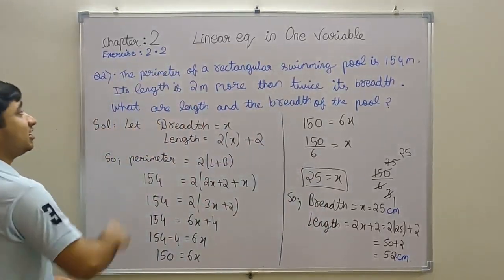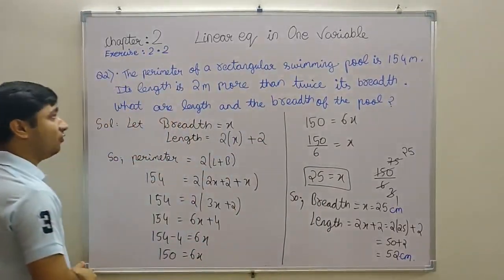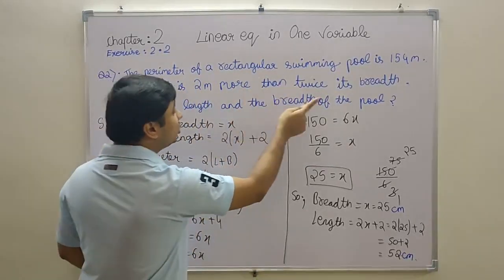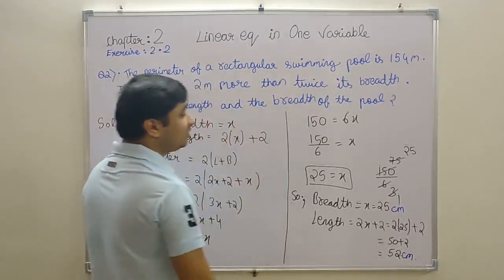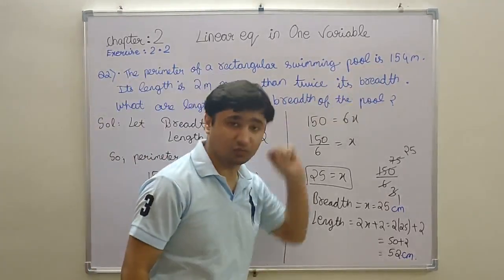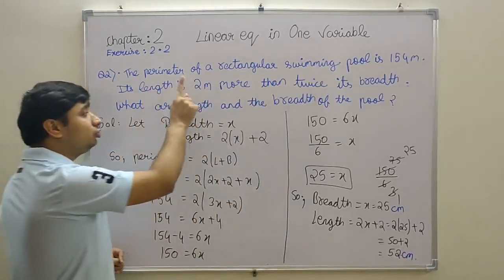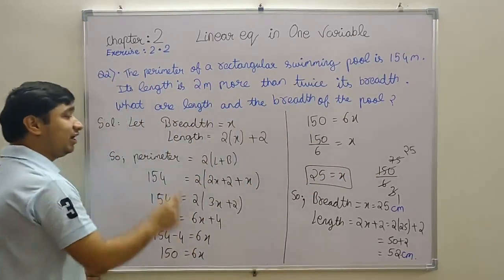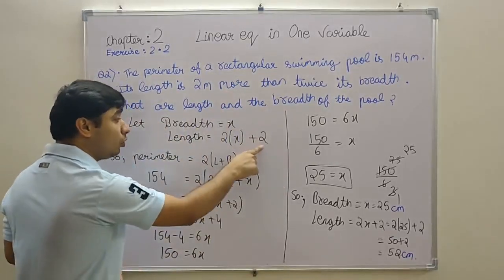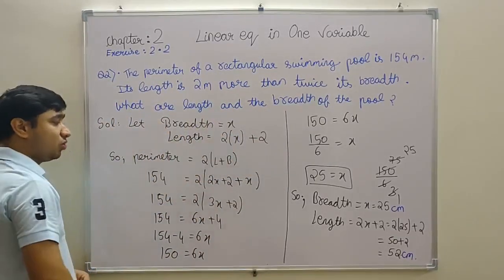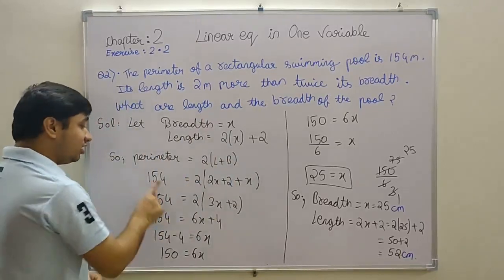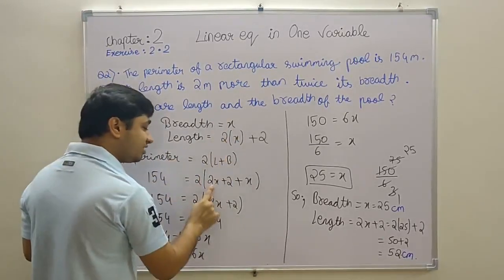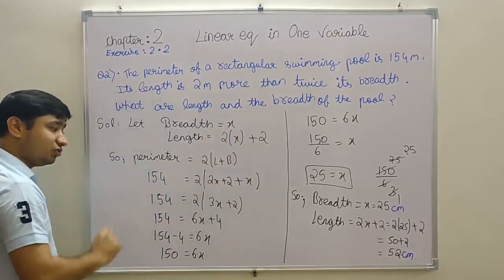Question 2: The perimeter of a rectangular swimming pool is 154 meters. Its length is 2 meters more than twice its breadth. What is the length and breadth? There is a swimming pool whose perimeter is 154 meters, and whose length is 2 meters more than twice its breadth. So let's take breadth as x and length as 2x plus 2, because it says 2 more than twice of its breadth. Perimeter you know is 2(length + breadth), right? 154 is the perimeter. We put the length and breadth values here. Length is 2x + 2, breadth is x.